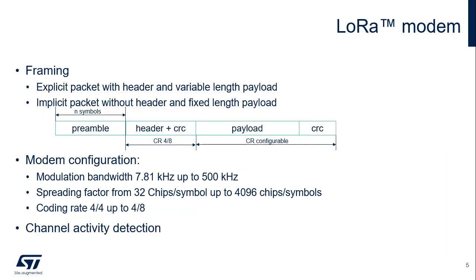The LoRa modem has two framing configurations. Explicit packet mode uses more overhead, leading to increased airtime; this packet type allows transfer of packets with variable-length payloads due to the inclusion of a header field. Implicit packet mode has minimum overhead, leading to minimum airtime; this packet type requires the transfer of all packets with a predefined fixed-length payload and does not include a header field.